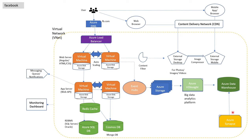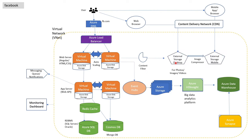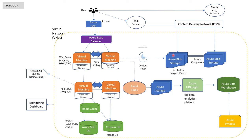The next thing we have is the external storage for images and videos. This storage will be replaced by Azure Blob Storage, which is specifically used for storing images and videos. In Azure we can take help of computer vision, or cognitive services, which are popular for AI and can be used for filtering the content of images and videos.